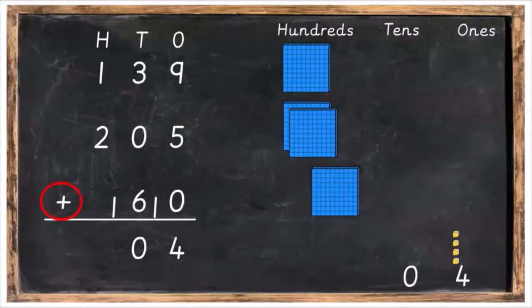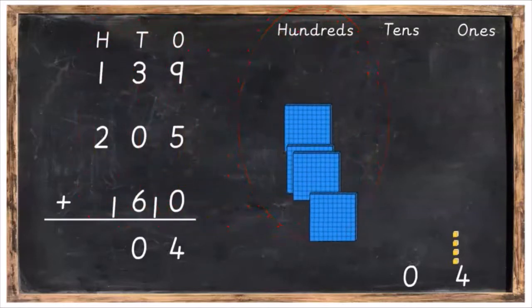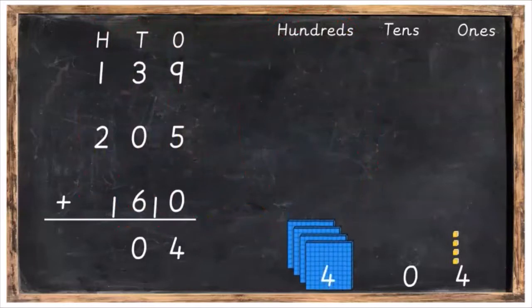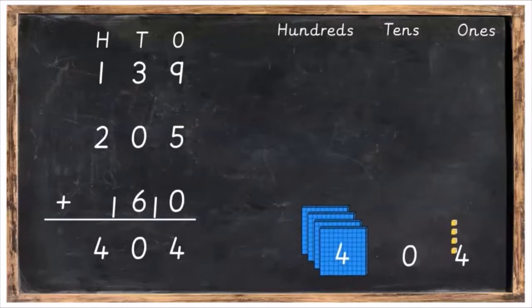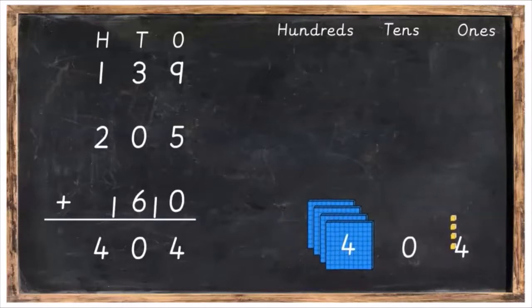Finally, we're going to add the hundreds. So we're going to add our 100 plus our 200 plus the 100 that we brought over. So one plus two plus one is equal to 400. There's our 400s. We're going to go back over to our sum now and write in our four. The final answer therefore is 404.